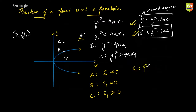S₁ is also called the power of a point with respect to the parabola. If S₁ is negative, the point is inside the parabola; if S₁ = 0, the point is on the parabola; and if S₁ > 0, the point is outside. We have already completed the school syllabus for parabola — this is above and beyond. This is a huge chapter; I will cover it in more depth later.